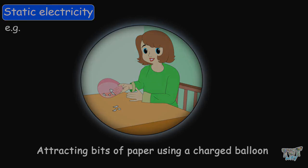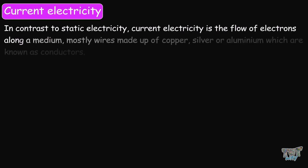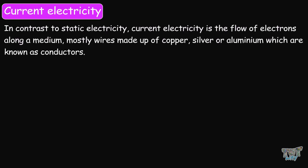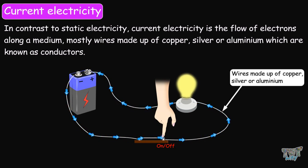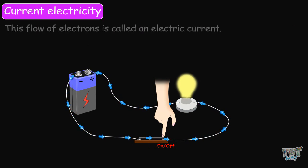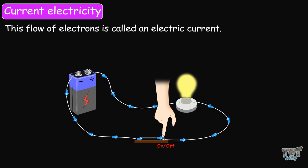Now we will learn about current electricity, which is the second type of electricity. In contrast to static electricity, current electricity is the flow of electrons along a medium, mostly wires made up of copper, silver, or aluminum. These are known as conductors, and this flow of electrons is called an electric current.